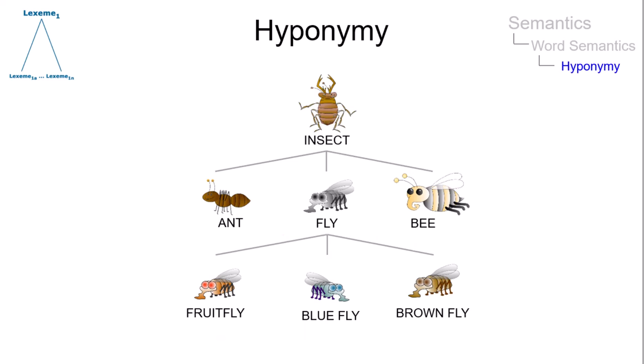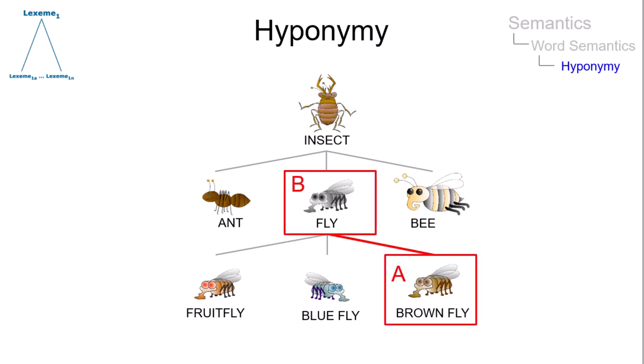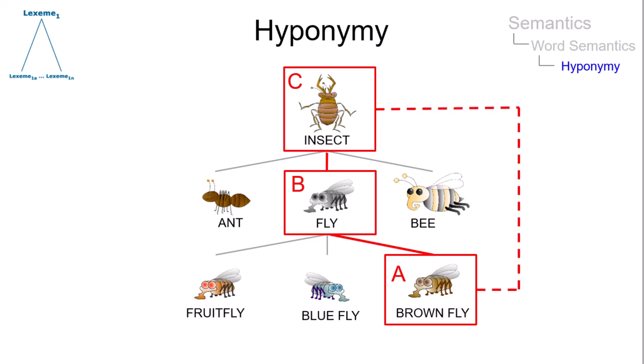Hyponymy is a transitive relation. If A is a hyponym of B, and B is a hyponym of C, then A is necessarily a hyponym of C.